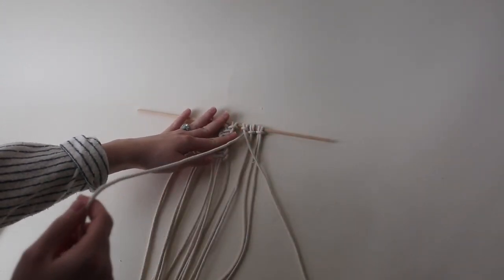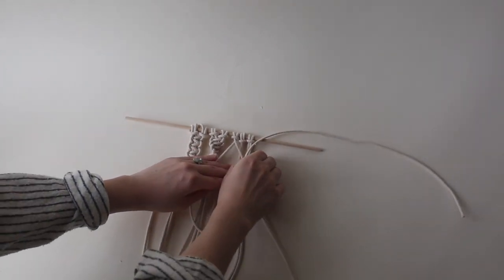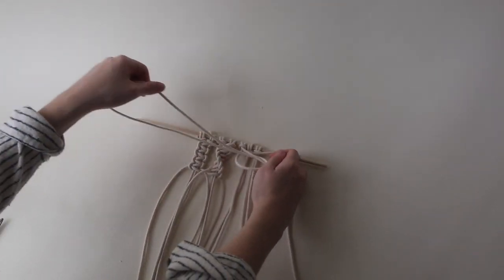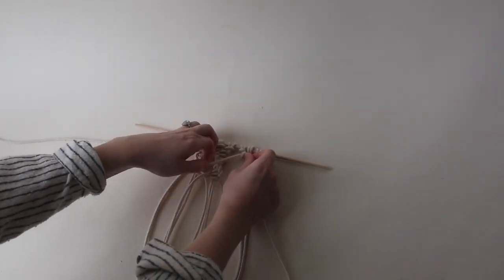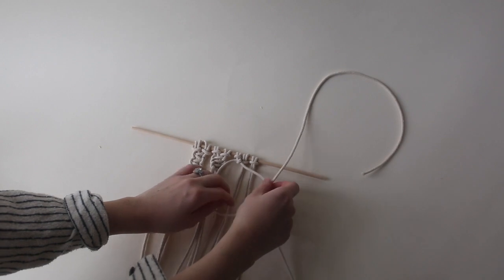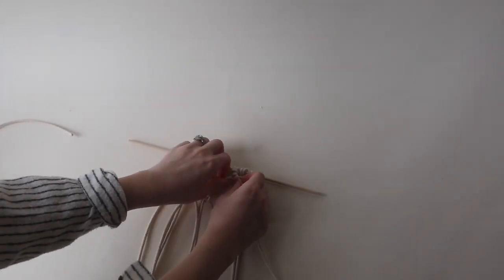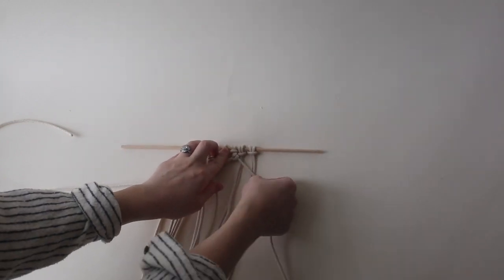Once you've got that ready, you're going to go ahead and take your cord to the far left, make a U that goes over your diagonal cord and down through the center, and pull that nice and tight. So again, a U that goes over your diagonal and down through the center, and we're pulling that nice and tight.